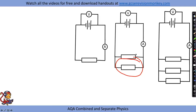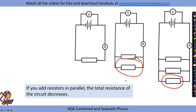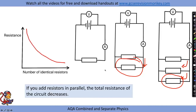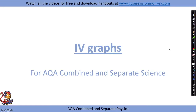With parallel circuits, you should find that adding resistors in parallel actually decreases the total resistance. This is because you're providing alternative pathways for the electrons, allowing them to flow more easily around the circuit. So the relationship is: as the number of resistors increases, total resistance decreases.